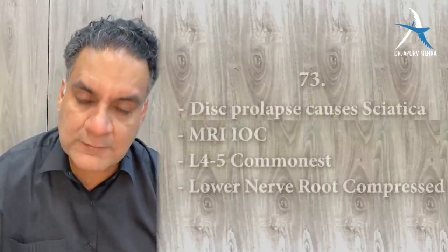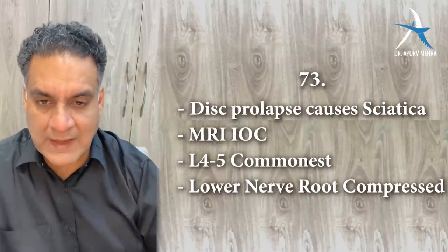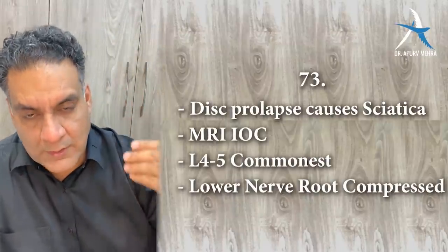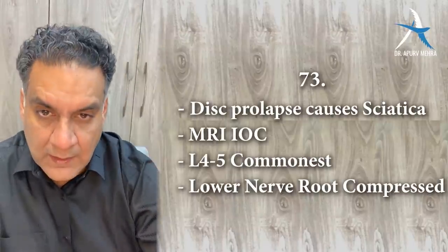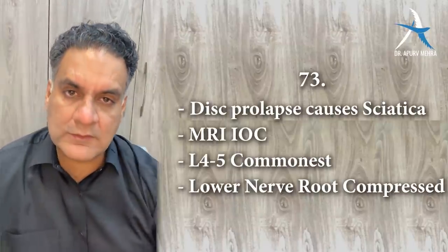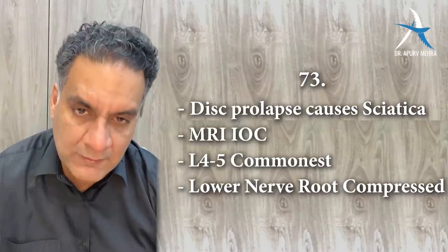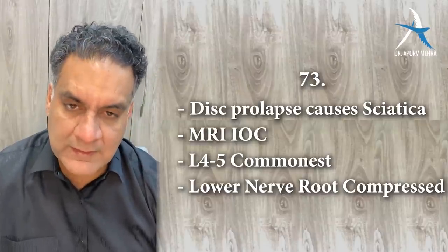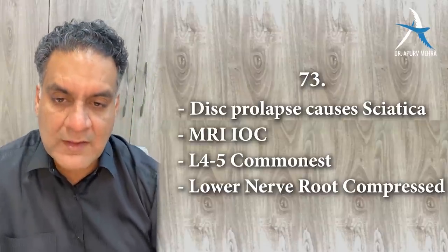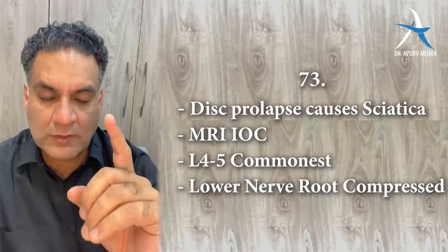Point number seventy-three: disc prolapse causes backache radiating down to one limb — sciatica. The most common disc prolapse is at L4-L5. The lower nerve root — L5 — is the most commonly compressed nerve root.